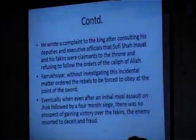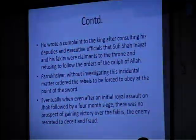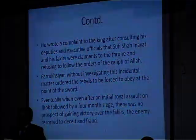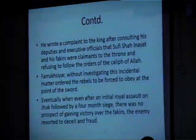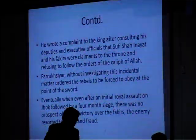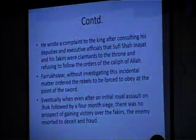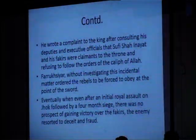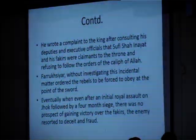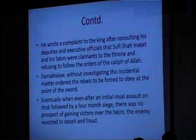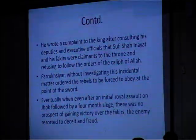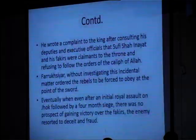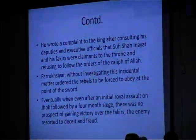Nawab Azam Khan decided to crush the movement for collective farming and began stoking the flames. He demanded dues from Sufi Shah Inayat which had been forbidden by the sovereign. The Sufi responded by challenging the Nawab's right of collection when those dues had been forgiven by the king. The Nawab wrote a complaint to the king, having his officials report that Sufi Shah Inayat and his fakirs were claimants to the throne and refusing to follow the orders of the Khalifatul Allah. Farukh Sayyar, without investigating, ordered the rebels to be forced to obey at the point of the sword.